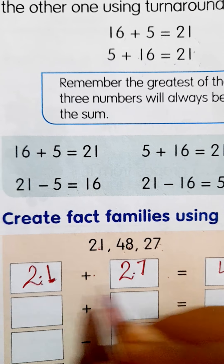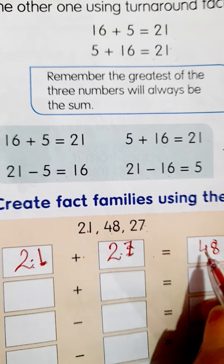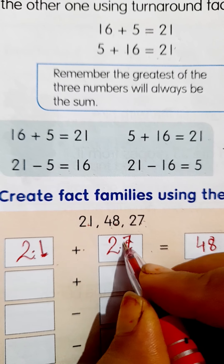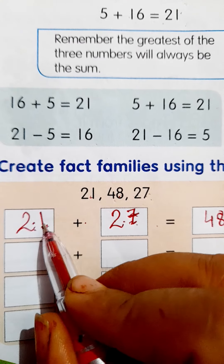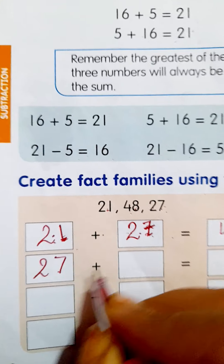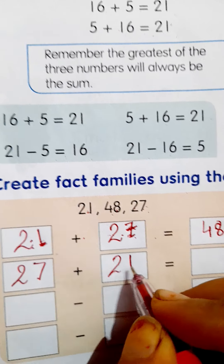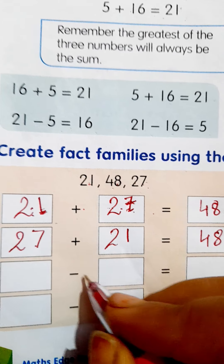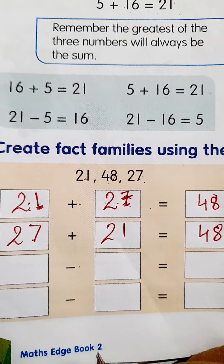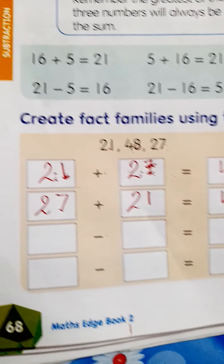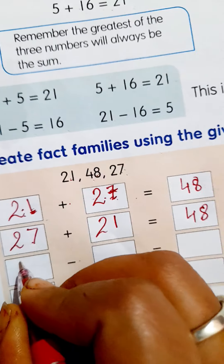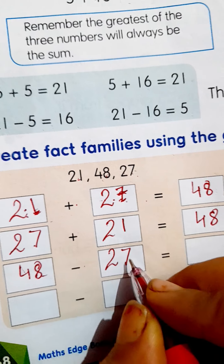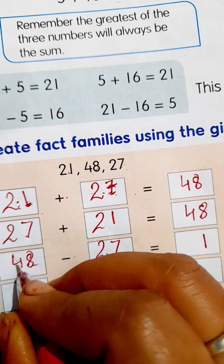So now start — new numbers: 21, 48, 27. Create fact families using the given numbers. First step: identify the greatest number — so 48 is the greatest number here. You will write 48, and the other two are 21 and 27. So 21 plus 27 gives us 48.